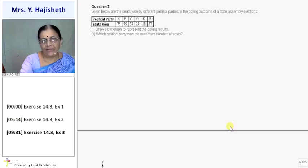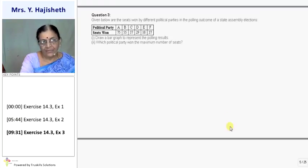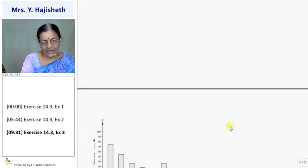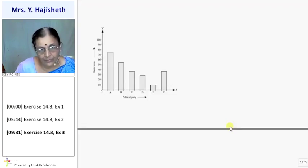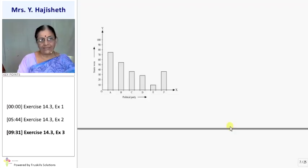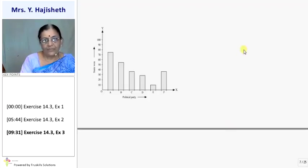Bar ke beech mein jo gap hai that I have kept uniform. Bar ki width bhi uniform rakhi hai and do bar ke beech ka jo distance hai that also I have kept uniform. Okay, clear. So are you clear about how to draw bar chart? Information is discrete then we can represent them by bar chart. But information is continuous then we cannot represent them by using bar graph. Ab dekho, information is given discrete. Dekho, you are given political party A, B, C, D, E and F are given and seats won are given 75, 55, 37, 29, 10 and 37.